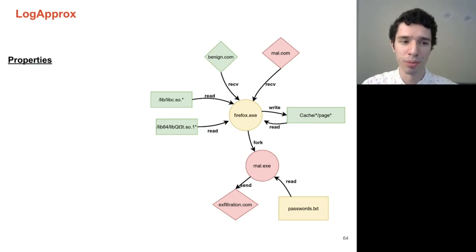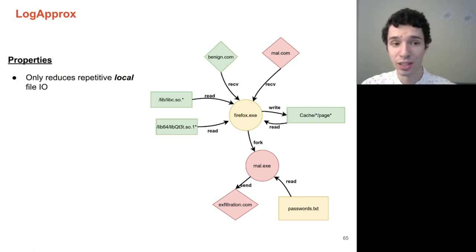LogApprox achieves some notable properties. First, LogApprox only reduces repetitive local file IO. Therefore, if an attacker uses network IO, which might be important in lateral movement, or any other system call that might be important in the coordination of malicious processes, this information will be perfectly preserved. Additionally, any anomalous local file IO will still be preserved. Therefore, if a process accesses a file that it would not normally access, such as a sensitive file, this information will not be reduced.